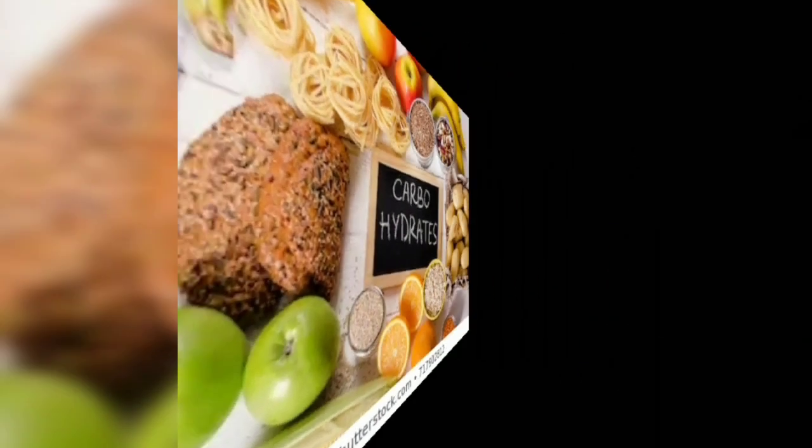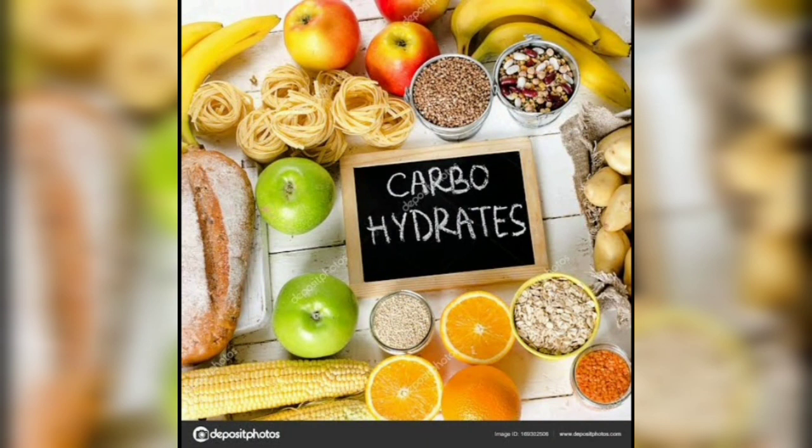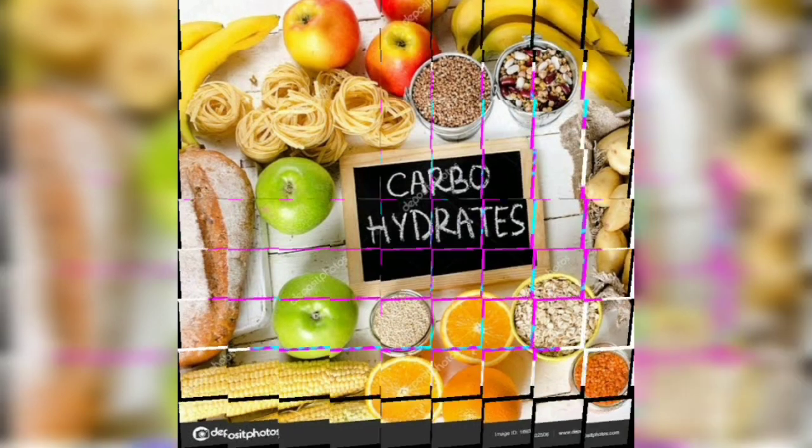Components of food such as carbohydrates are complex substances. These complex substances cannot be utilized as such — they must be broken down into simpler substances. The breakdown of complex components of food into simpler substances is called digestion.